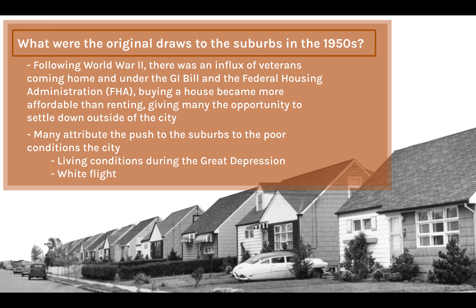It's important to note what the original draws to the suburbs were during the suburban sprawl in the 1950s. Many veterans were coming back from World War II, and the government, as an attempt to ensure veterans had a place to live and that there would be fewer strikes, created the GI Bill, which helped them pay their mortgage and college. Under the Federal Housing Administration, it was much easier and cheaper to afford a house than to rent, giving many people the opportunity to settle outside of the city.